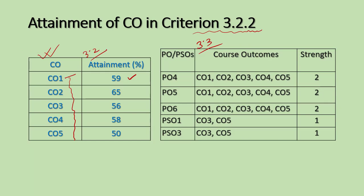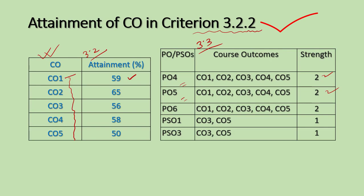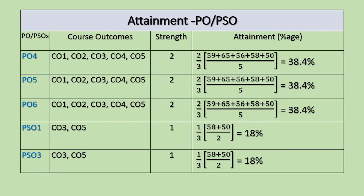As just calculated, the mapping strength for PO4 is 2, for PO5 strength is 2, for PO6 strength is 2, and so on. The attainment of course outcomes for all courses with respect to the set attainment levels is already recorded in Criterion 3.2.2, where targets were set for both internal assessments and end-semester examinations and the attainment level for each course was computed. For PO4, the strength is 2, so the scale factor is 2/3.